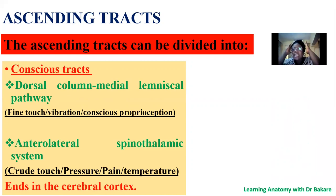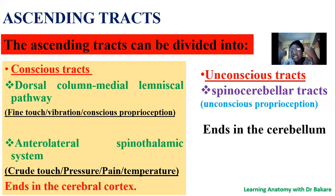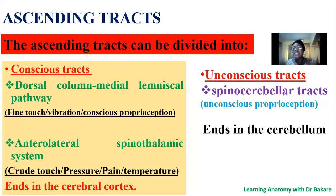No matter where they are coming from or where their synapses are, they all finally terminate in the cerebral cortex. The second subdivision is the unconscious tract — the spinal cerebellar tract — which terminates in the cerebellum and carries unconscious proprioception. A good example is during walking: we are able to guide ourselves around because the change in muscle length is being sensed and processed in the cerebellum, guiding us without tripping. We are not consciously aware of this change in muscle length.